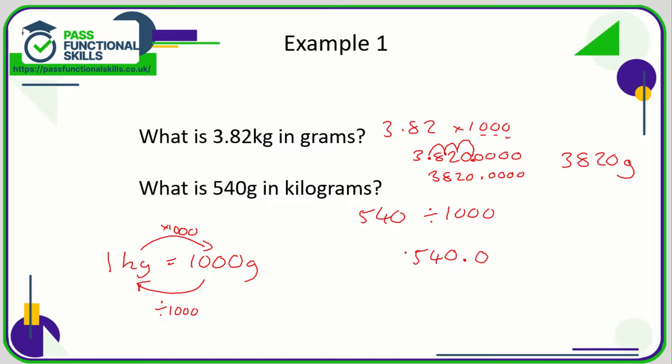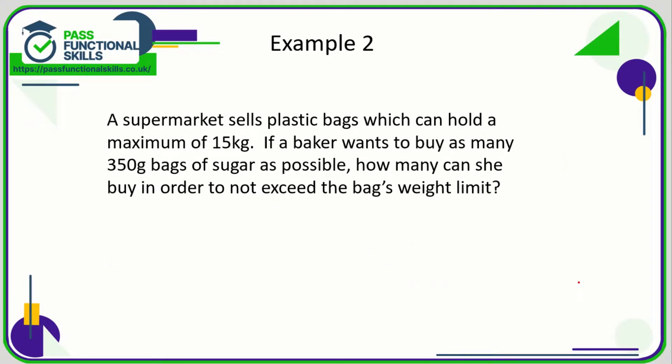We're going to make this number smaller, so the decimal point is going to be moving to the left. To make that easier visually, I'm going to put a few zeros in: one, two, three. So the answer is 0.54 kg.